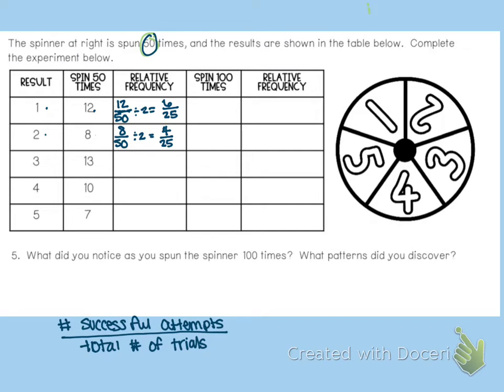Relative frequency is just taking the number of successful. So successful on 3 is 13 out of the total number of attempts. And they spun it 50 times, and that is simplified.